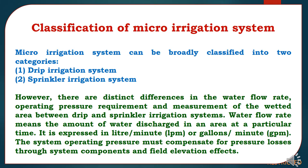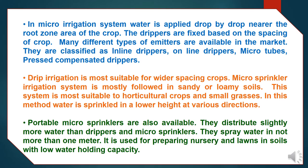In Micro-Irrigation systems, water is applied drop by drop nearer to the root zone area of the crop. The drippers are fixed based on the spacing of the crop. Many different types of emitters are available in the market, classified as in-line drippers, on-line drippers, micro-tubes, pressure-compensated drippers, etc. Drip irrigation is most suitable for wider-spacing crops. Micro-sprinkler irrigation systems are mostly followed in sandy or loamy soils and are most suitable for horticultural crops and small grasses. Water is sprinkled at a low height in various directions. Portable micro-sprinklers are also available, distributing slightly more water than drippers, spraying water within no more than 1 meter. They are used for preparing nurseries and lawns in soils with low water-holding capacity.